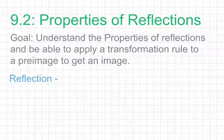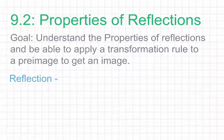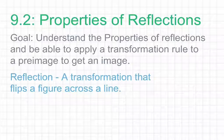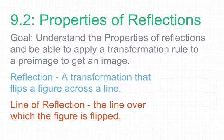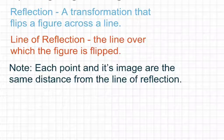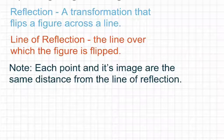We have two terms to look at in this module. Our first term is reflection, which we can define as a transformation that flips a figure across a line. That definition leads us to our second term, line of reflection, which can be defined as the line over which the figure is flipped — simply the line that we mirror the image to the other side of. Note that each point and its image are the same distance from the line of reflection.